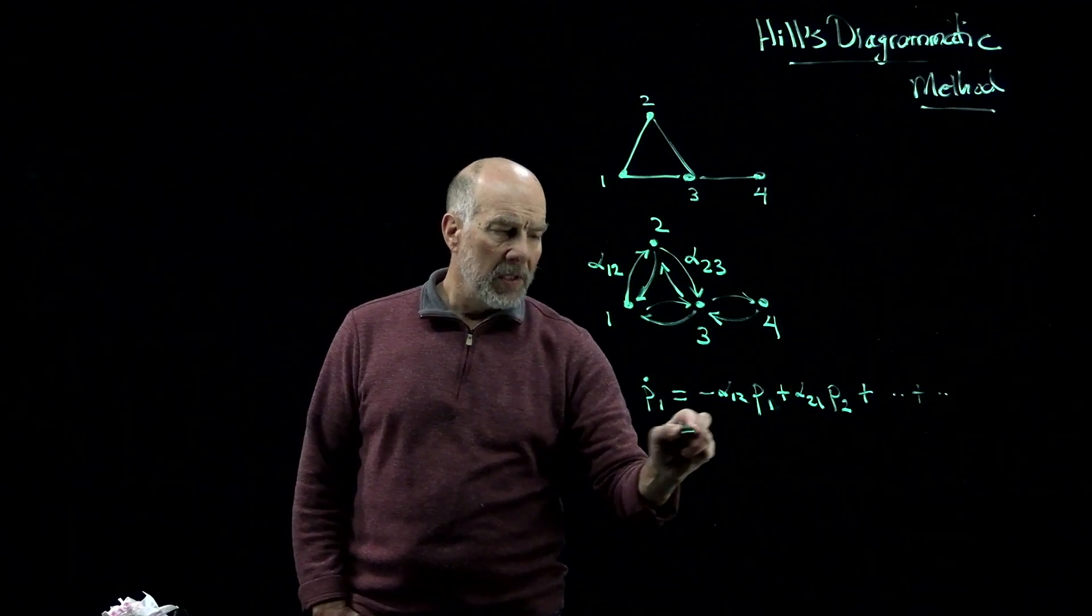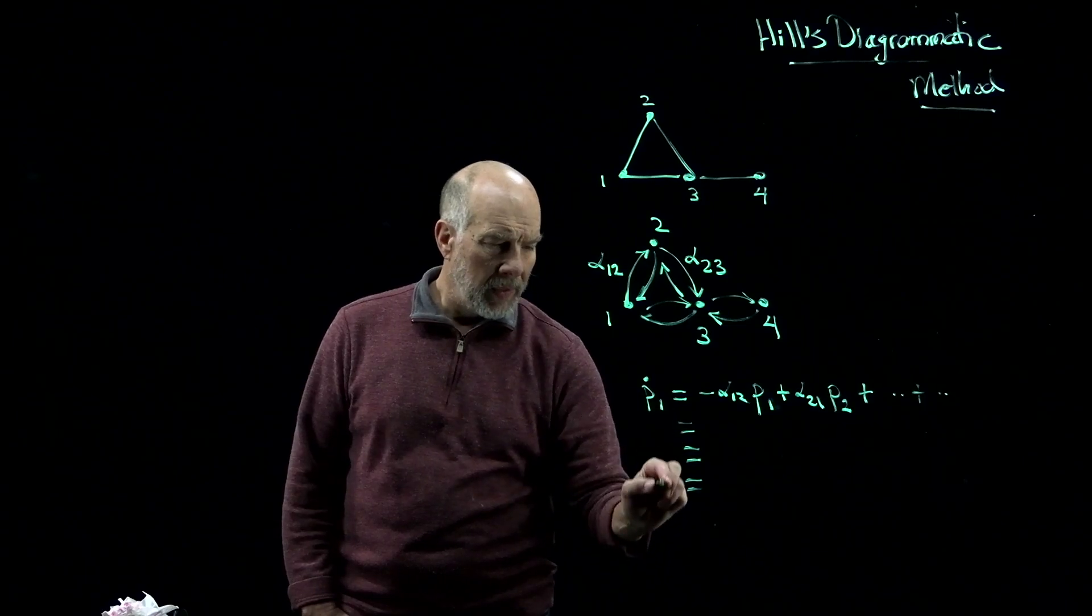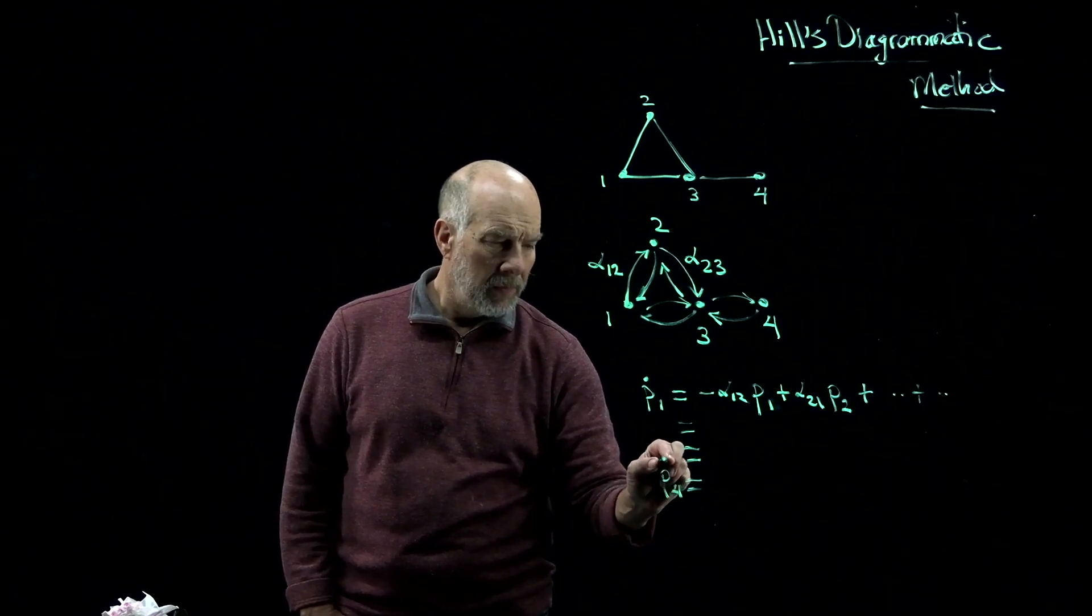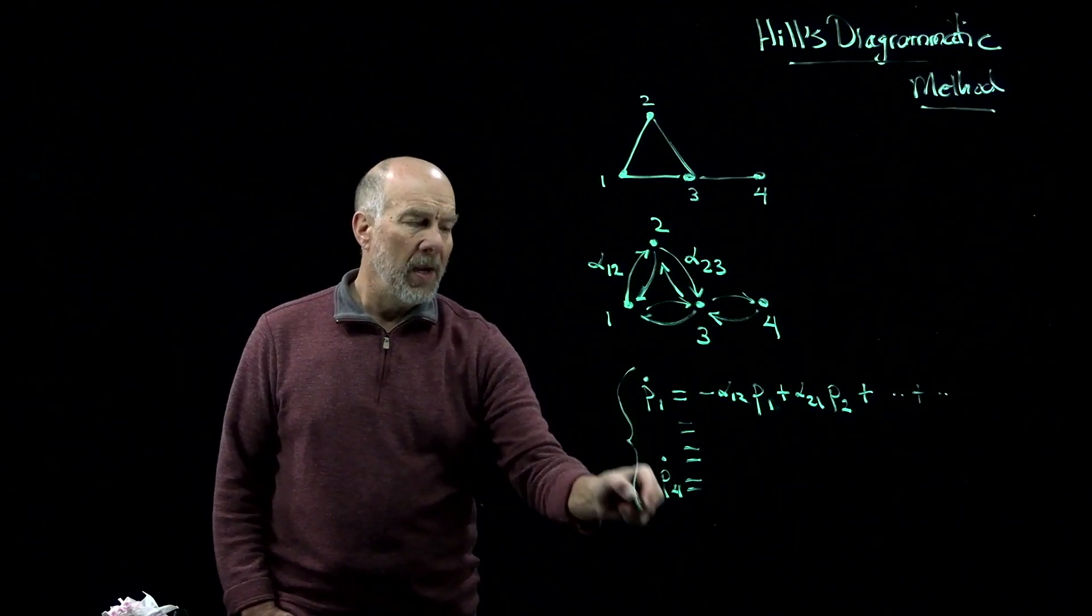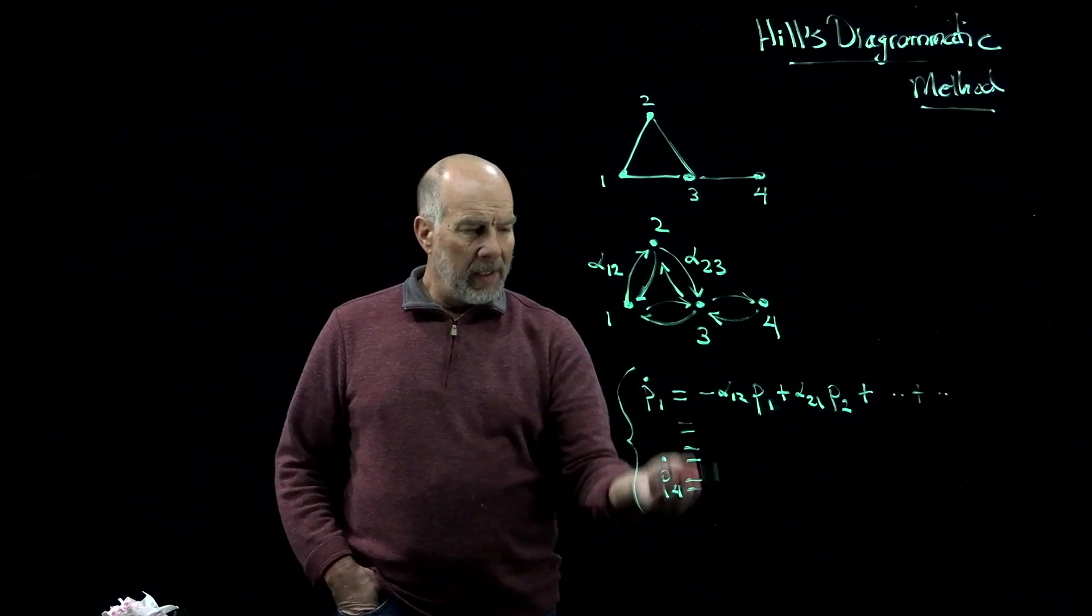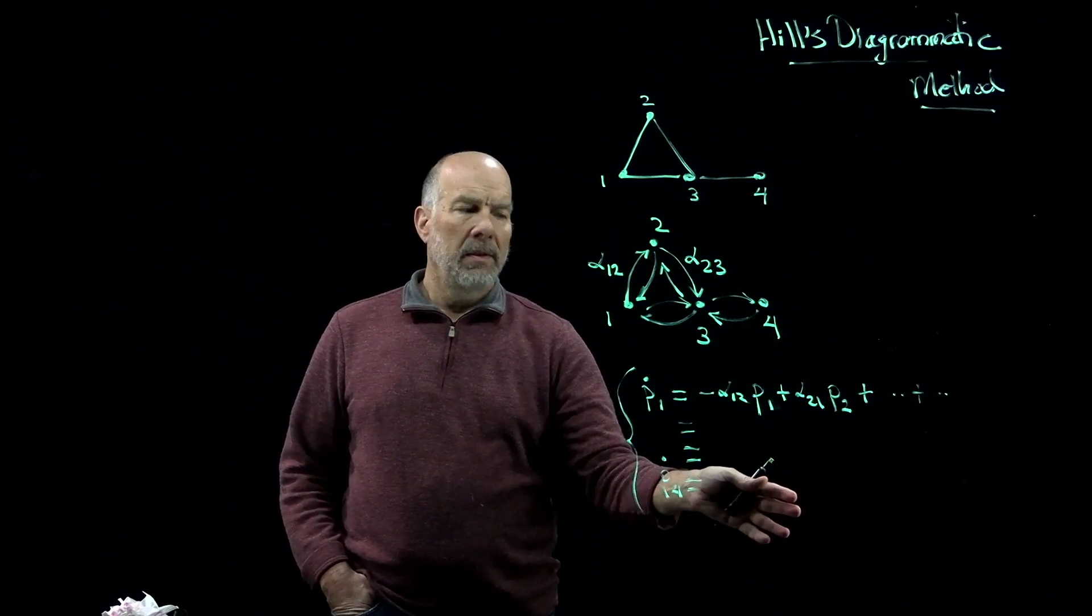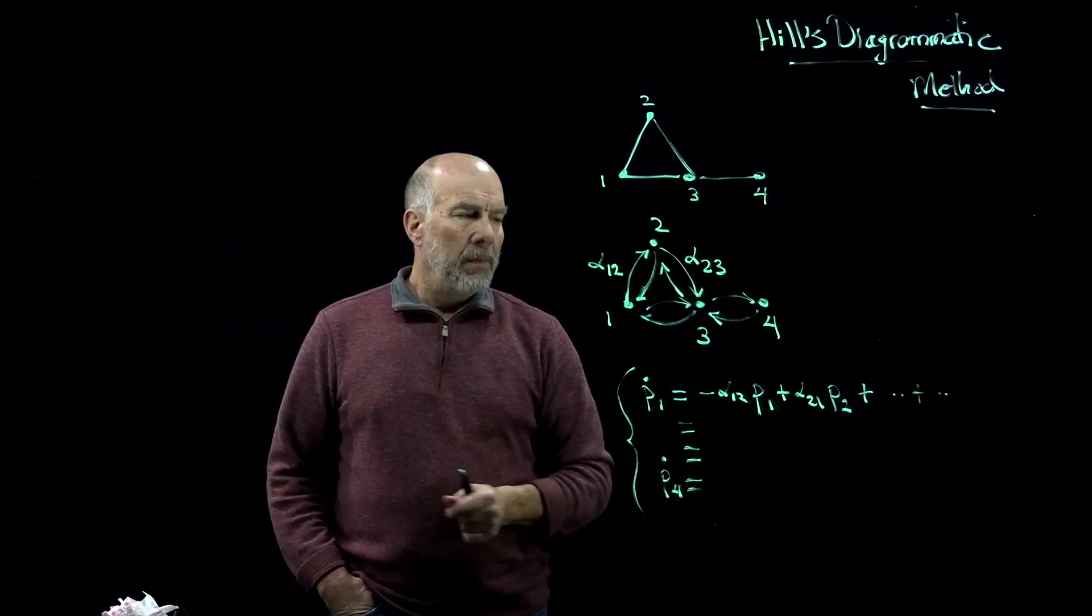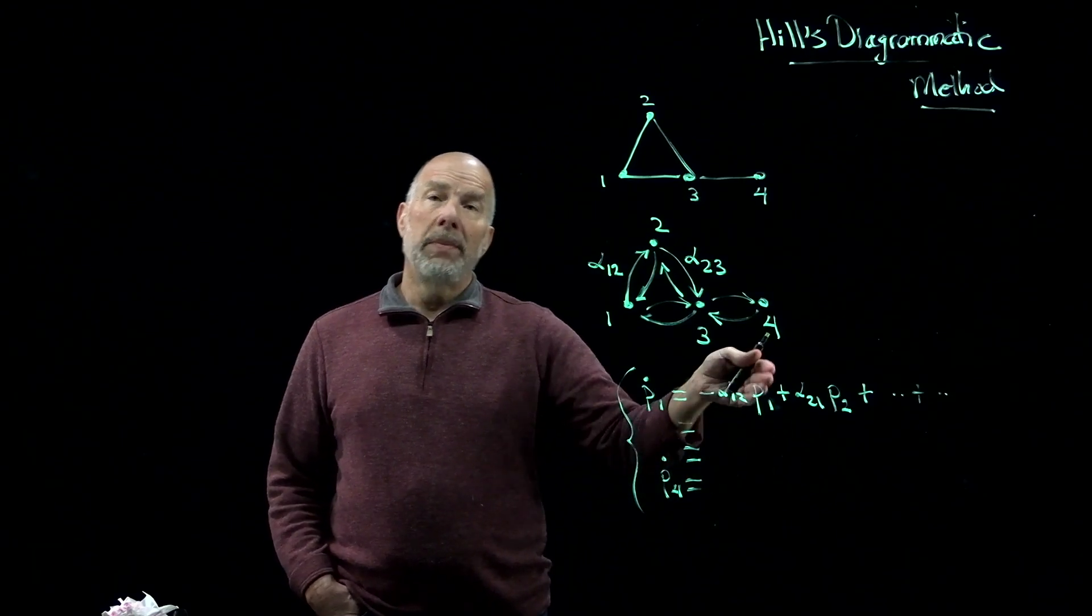If you wrote down all these equations, there'd be four of them, from p1 to p4. And this set of equations has a property where if you add them all up, you'll get zero on the right-hand side. That means that actually the last equation is not independent of the others.